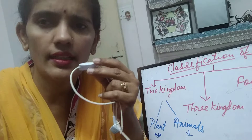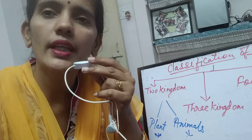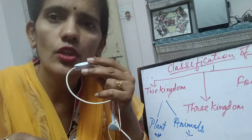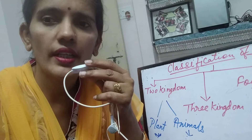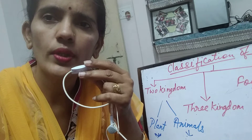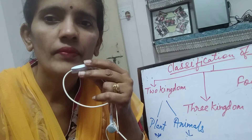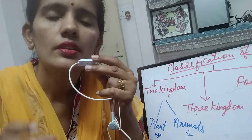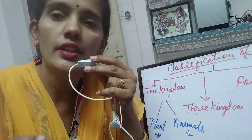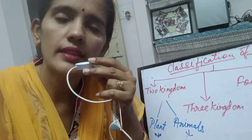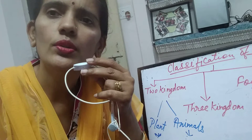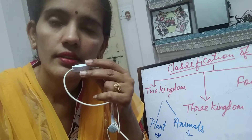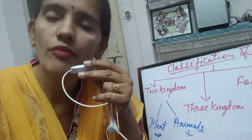Sponges are sessile and irregular in shape, looking like plants, so it was again unclear where to place them. There were also organisms like diatoms and protozoans which share a number of common characteristics of both plants and animals, making it impossible to justify whether to keep them in the plant or animal kingdom.